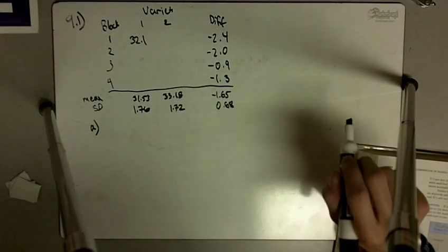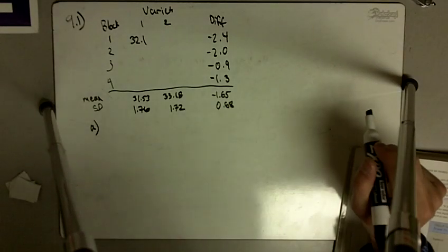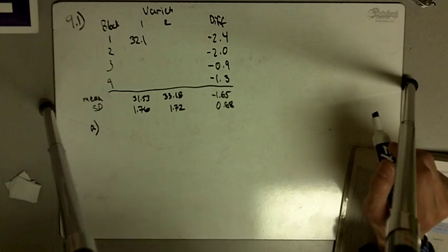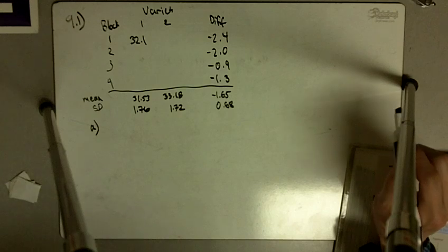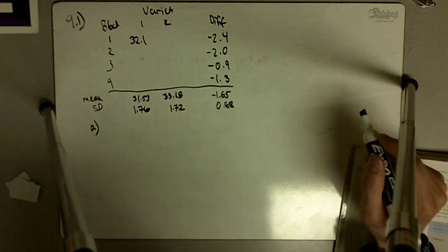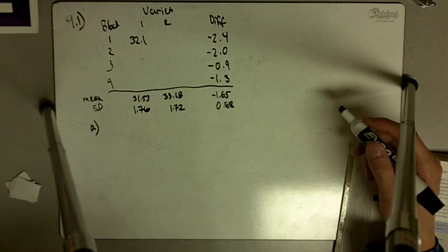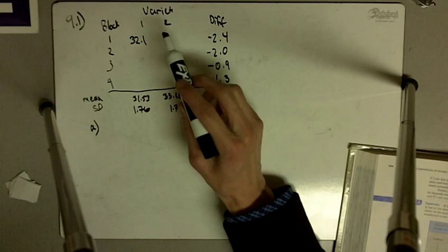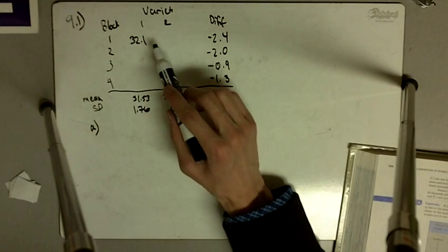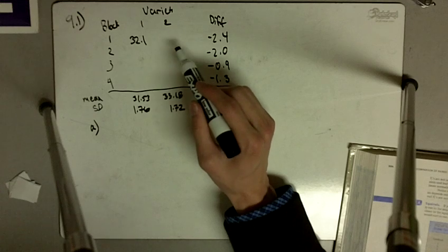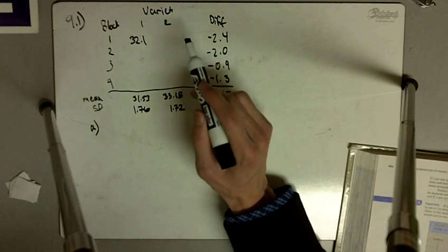Exercise 9.1 says: in an agronomic field experiment, blocks of land were subdivided into two plots of 346 square feet each. The plots were planted with two varieties of wheat using a randomized blocks design. The plot yields in pounds of wheat are given in the table. In block one, variety one produced 32.1 pounds and variety two produced 34.5.